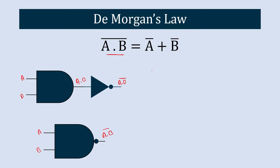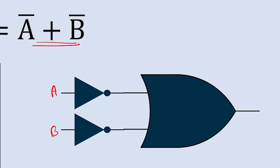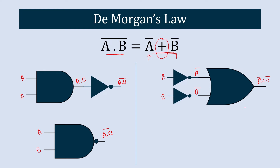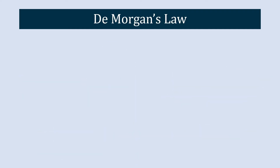Now we'll draw the logic circuit for the right-hand side. We have inputs A and B, and we use two NOT gates to get A bar and B bar. Then we pass them through an OR gate to get A bar plus B bar. This circuit can further be represented as a two-input bubbled OR gate. By observing these circuits, we can say that the output of the NAND gate is similar to the output of the two-input bubbled OR gate.